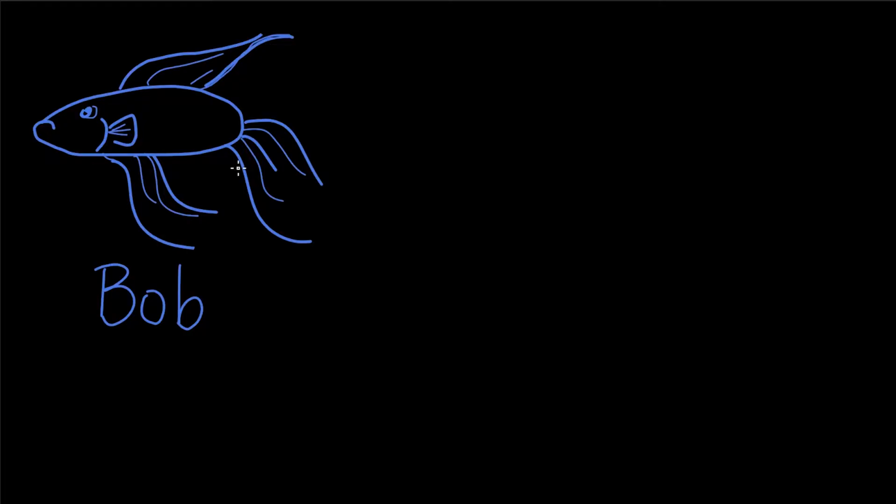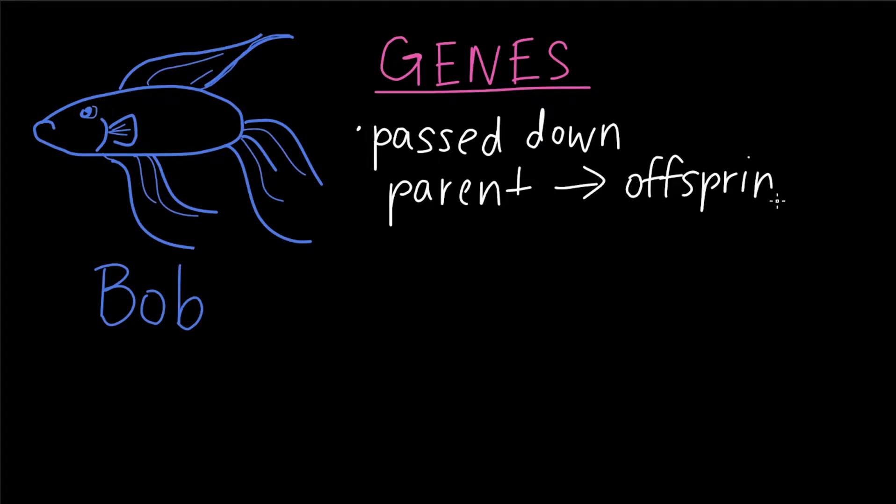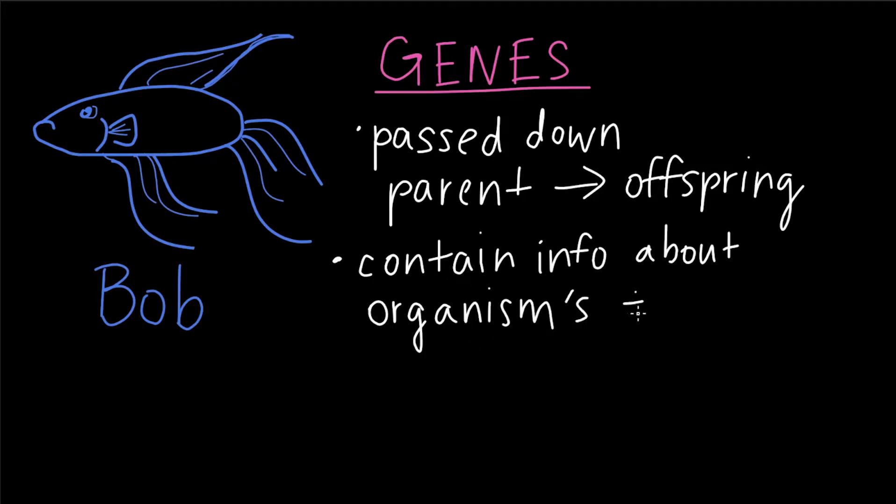We'll start by defining genes. What are genes? Genes are basic hereditary units that are passed down from parent to offspring, and they also contain information about an organism's traits.